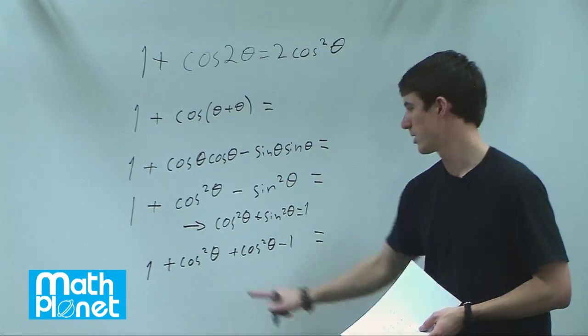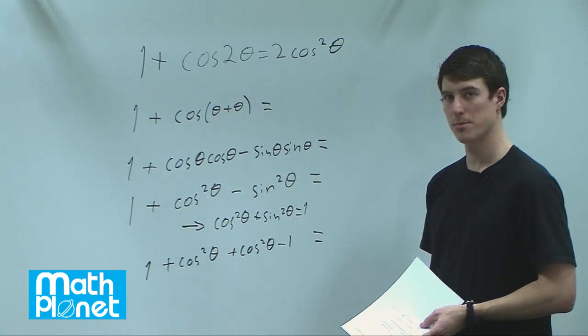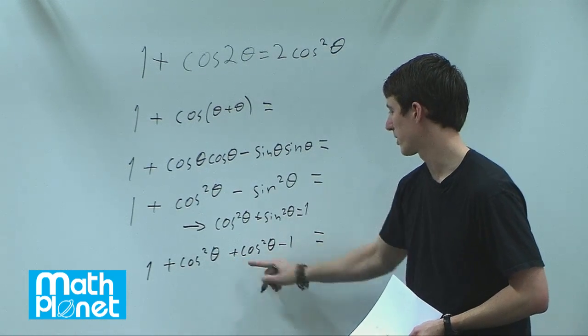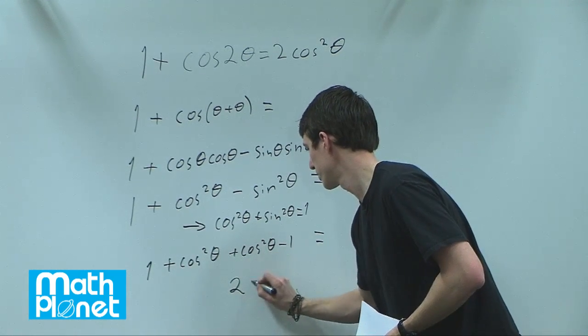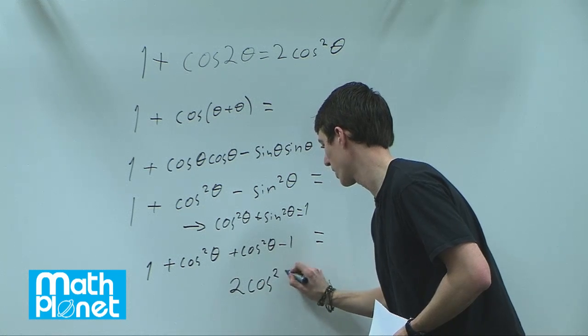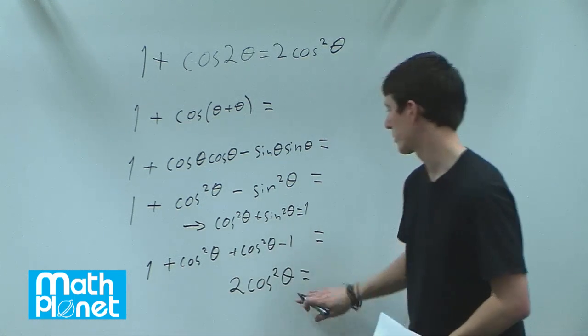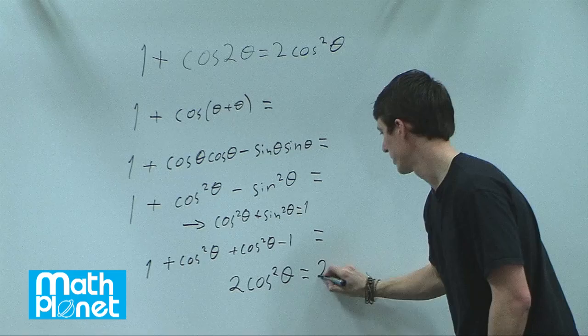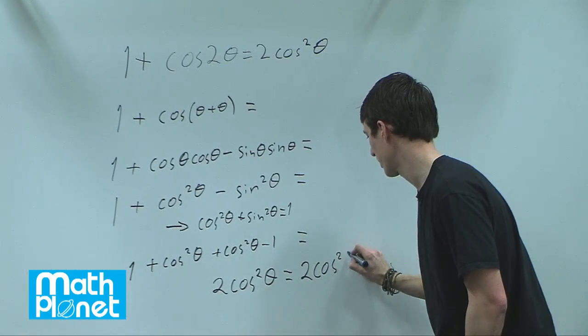So now we can simplify this. 1 minus 1 is 0, cosine squared plus cosine squared gives us 2 cosine squared theta. Is that what we originally had up here? Yes it is, 2 cosine squared theta.